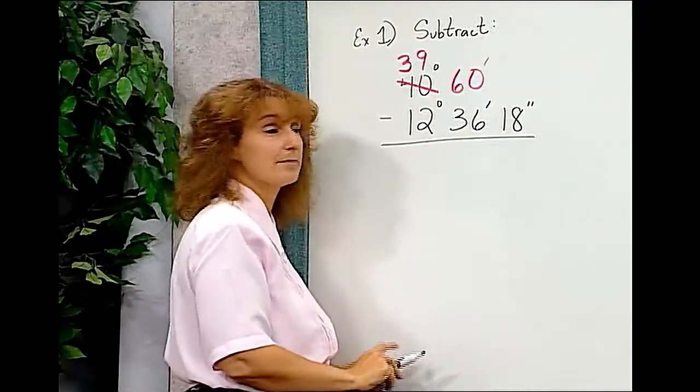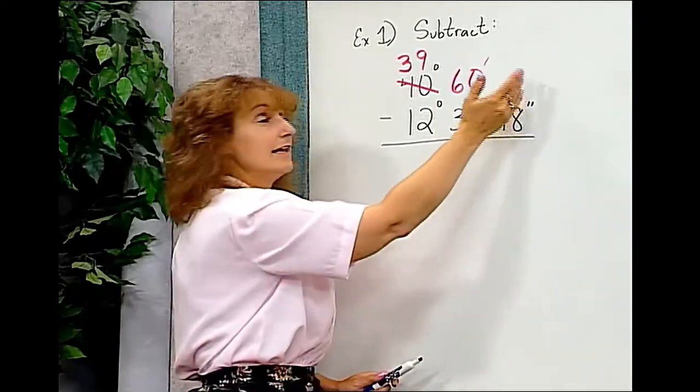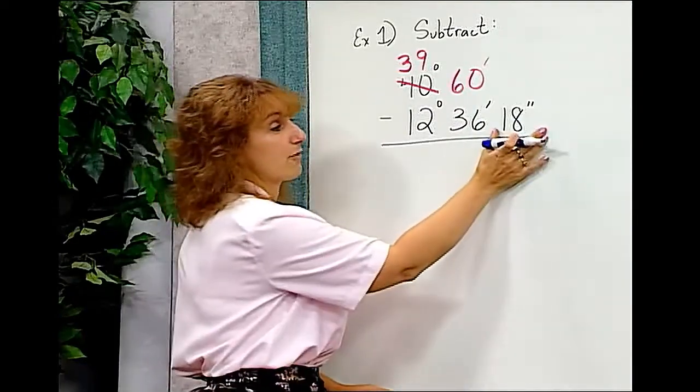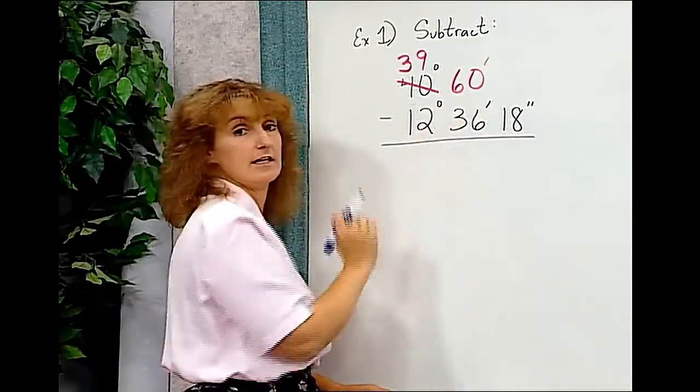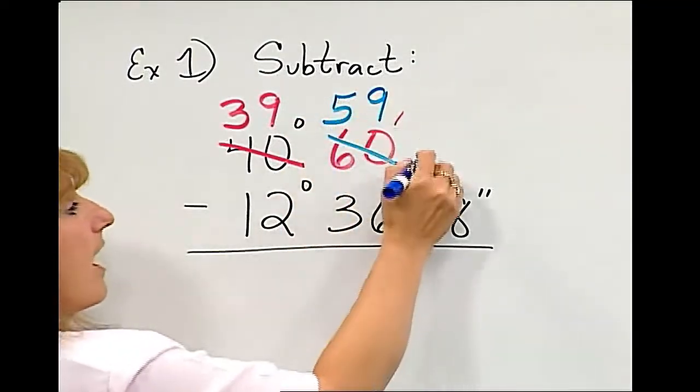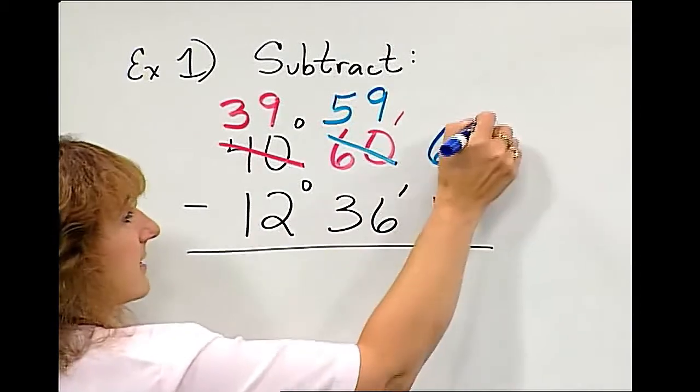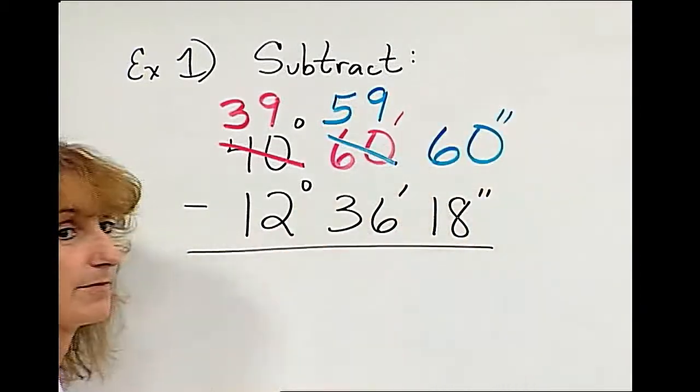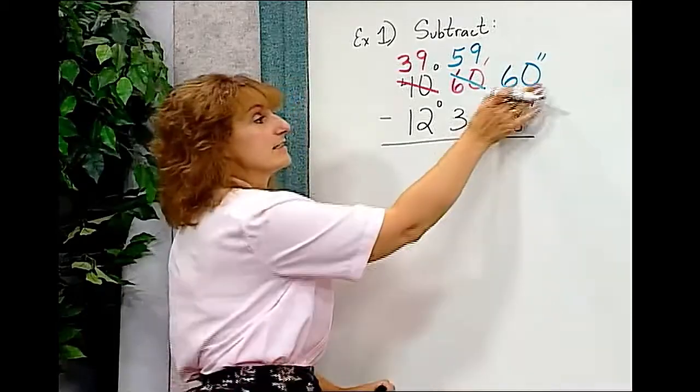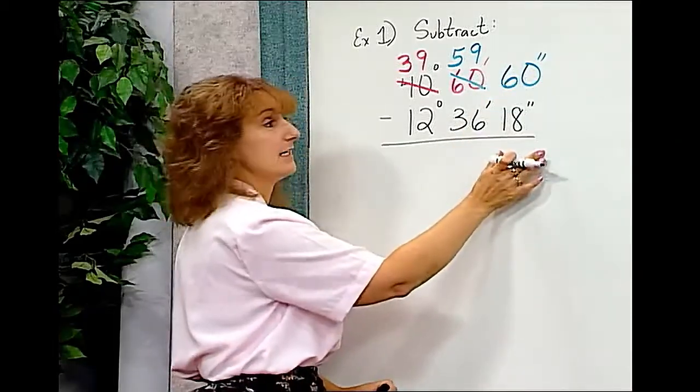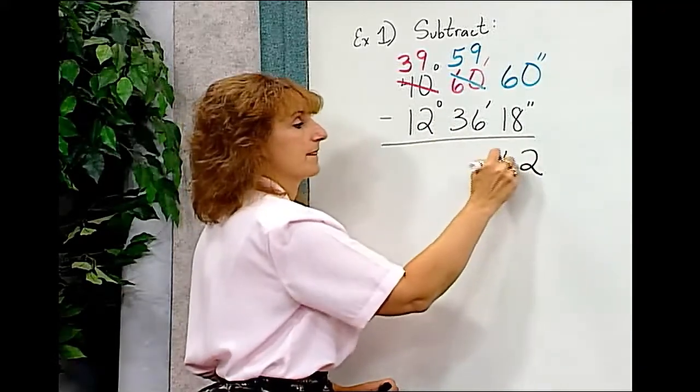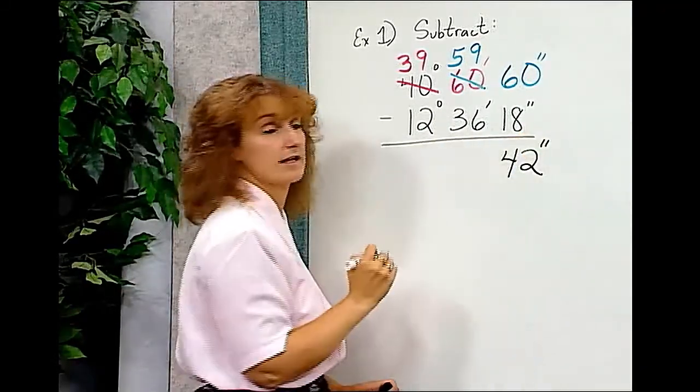But I still can't begin to subtract. I need to borrow again. And you have to remember that there are 60 seconds in a minute. So when I borrow from my minute, I have to bring 60 seconds over here. Now I can subtract. Because I have 60 minus 18. Seconds minus seconds. I'm going to subtract those. And get 42 seconds.